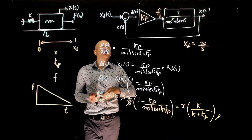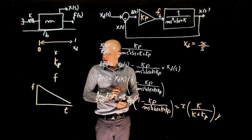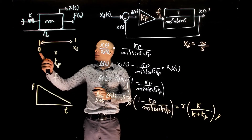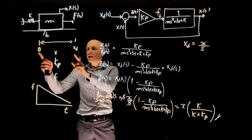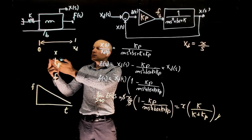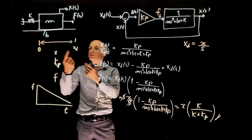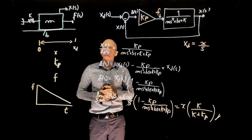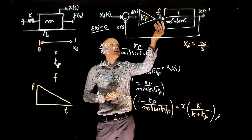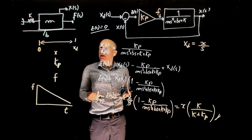Can we make the steady state error zero by increasing kp? The answer is no. Think about it physically: if the mass starts at zero and must go to xd, the error is large at first, so the force is large. As the mass moves, the error decreases and so does the force. When the mass reaches xd, the error becomes zero, the force becomes zero — and then the spring pulls the mass back. So the steady state error can never be zero.